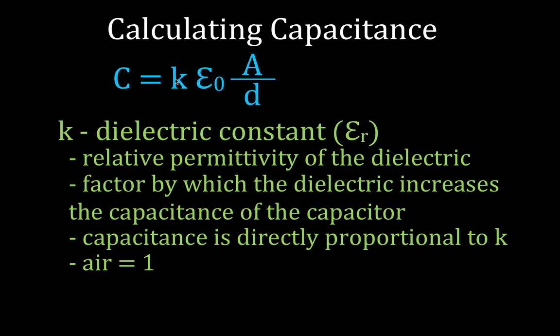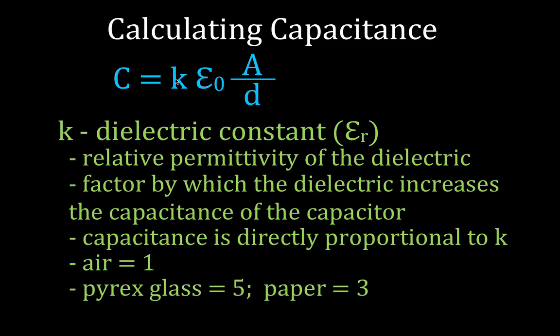Air has a dielectric constant of 1. Other materials like glass or paper have dielectric constants greater than 1. For example, glass has a dielectric constant of 5, paper is 3. Water actually has a dielectric constant of 80 because water is a polarized molecule — it can be easily polarized to increase the capacitance of a capacitor.